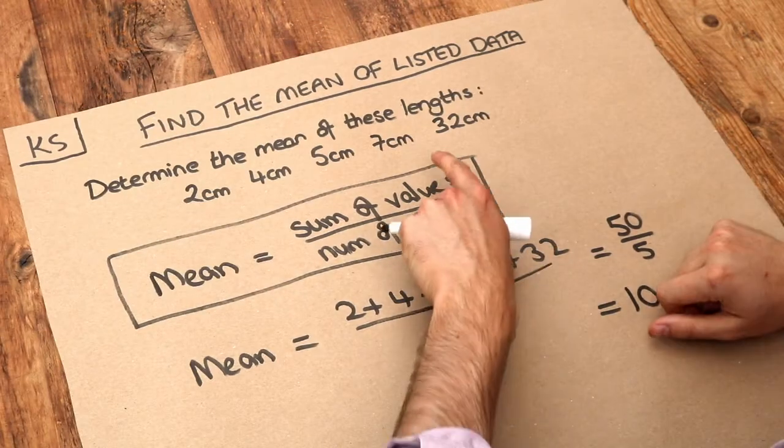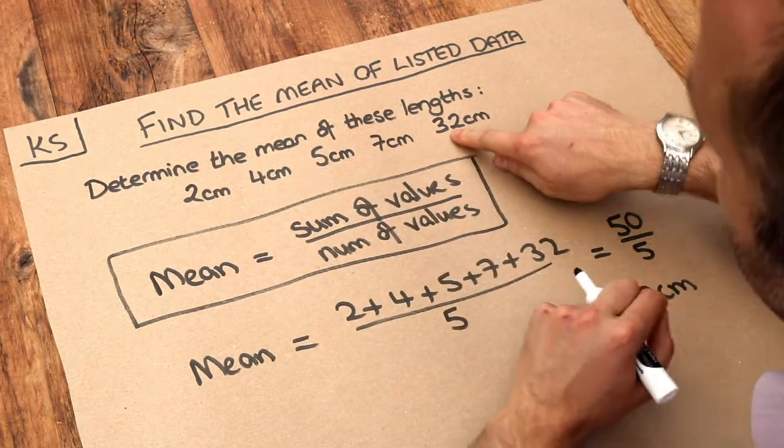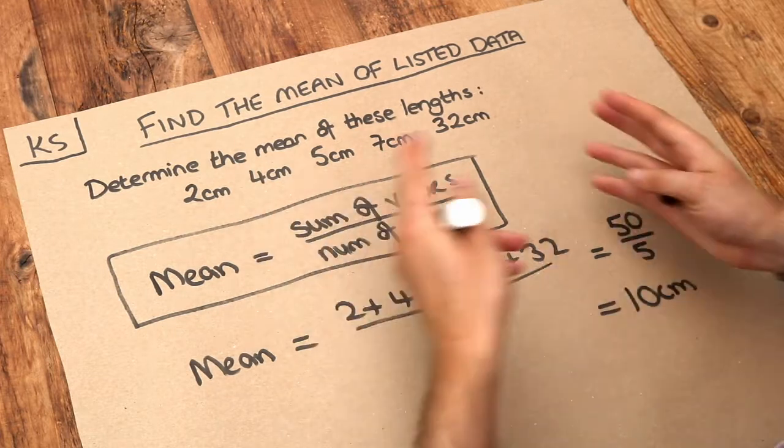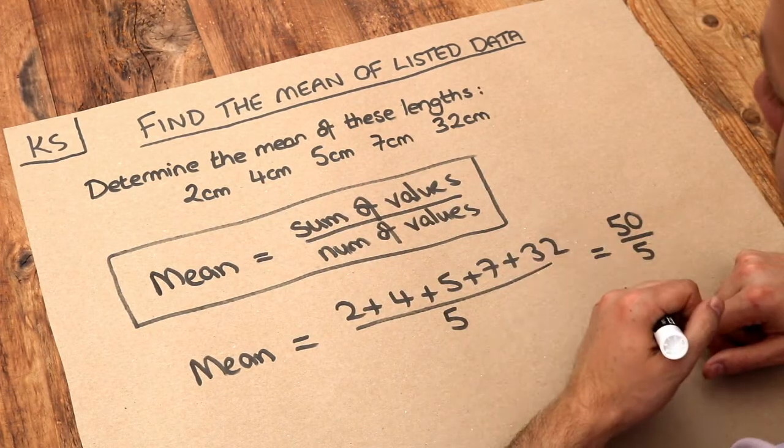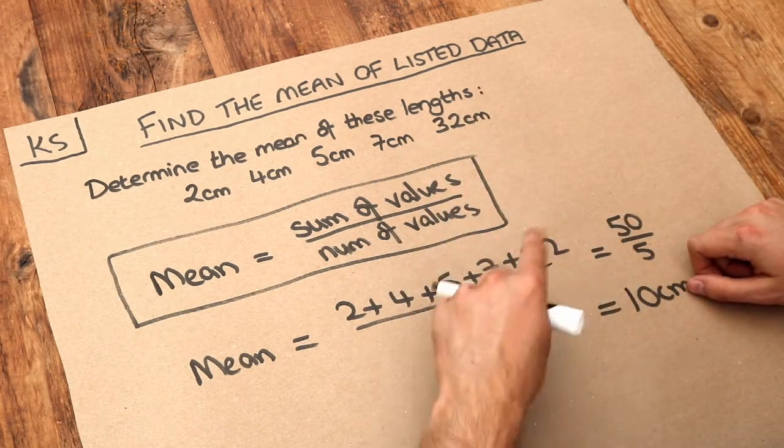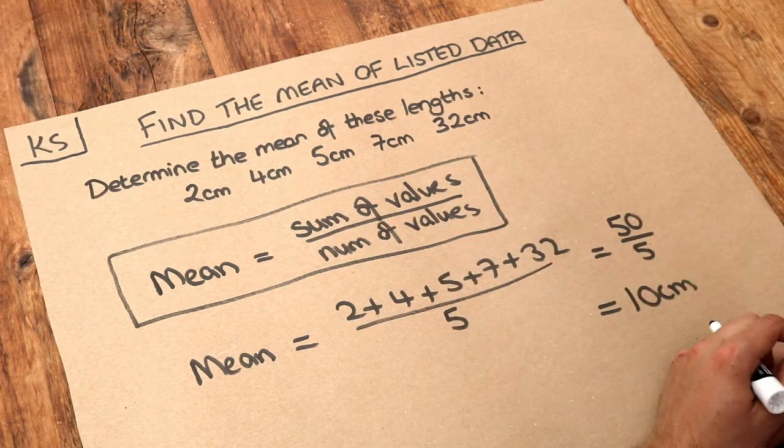Now interestingly 10 centimeters is bigger than most of these values and the reason is because this really big length here is driving up that mean, that average. Now there are other types of average which aren't sensitive to extreme values like this. For example the median, you take the middle value and that would be 5 centimeters, but we explore that in a different video.